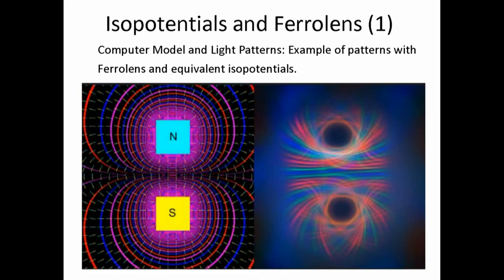On the left-hand side is a computer-generated plot of a north pole and a south pole of two magnets facing the observer. On the right-hand side, we see a real world image of a ferrolens with 36 LEDs around the perimeter. You can easily see that the left-hand image is a dipole and the right-hand image is also a dipole.